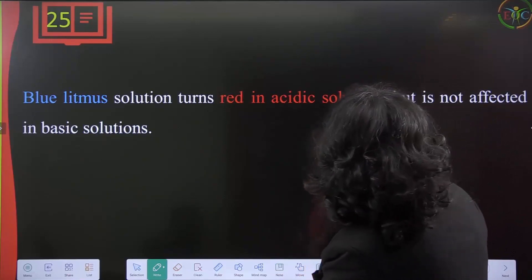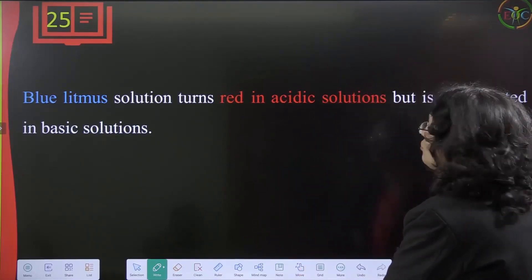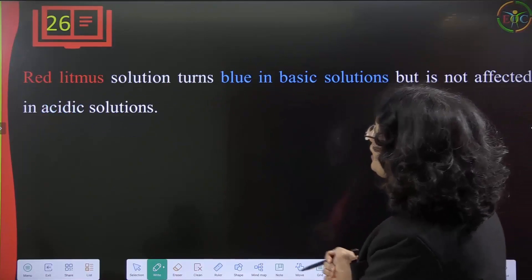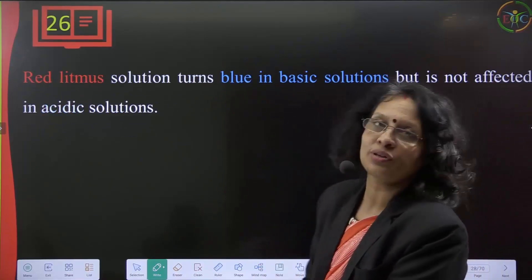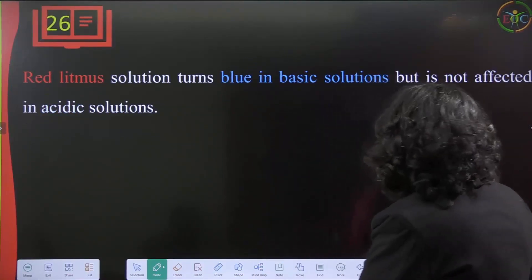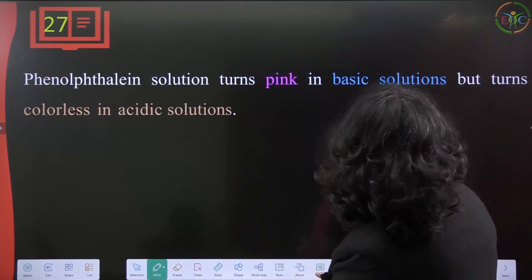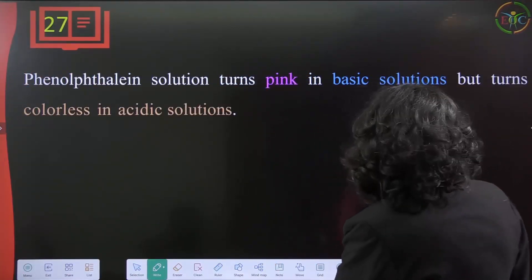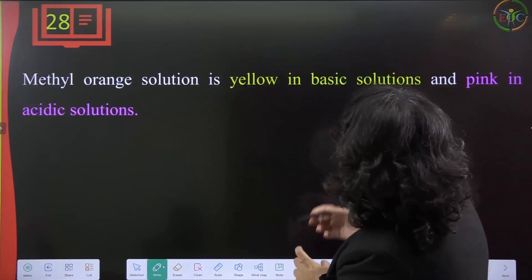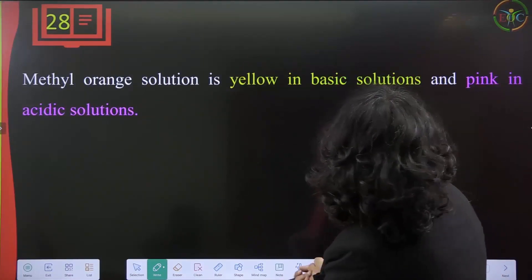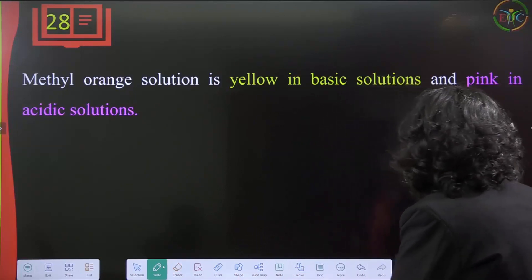Blue litmus solution turns red in acidic solution but is not affected in basic solution. Red litmus turns blue in basic solution but is not affected in acidic solution. Phenolphthalein turns pink in basic solution but is colorless in acidic solution. Methyl orange is yellow in basic medium and pink in acidic medium.